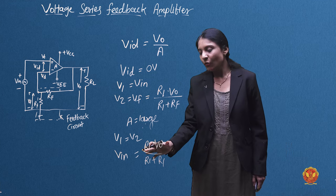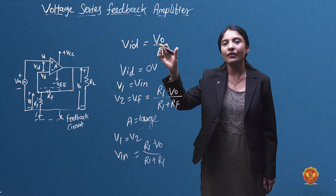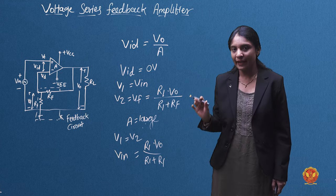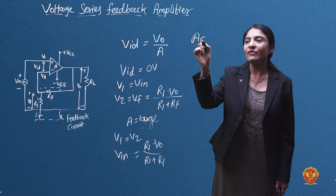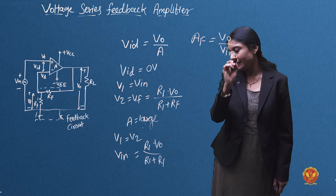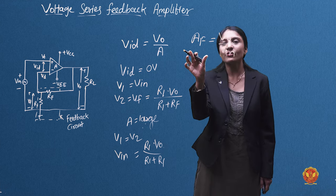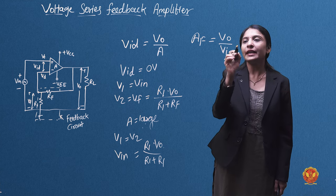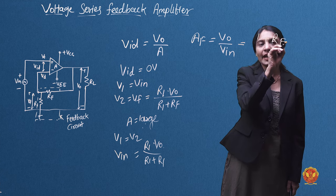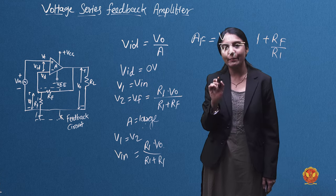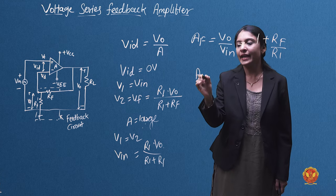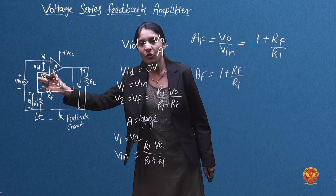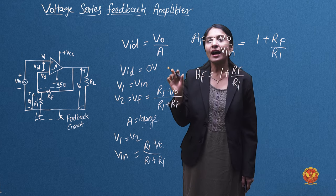We will calculate VID, which is VO divided by A. From the closed-loop feedback gain, we get AF equal to VO divided by VIN. Solving this equation gives us VO divided by VIN equal to one plus RF divided by R1. Therefore, the closed-loop voltage gain AF equals one plus RF by R1, when the input differential voltage of the voltage series feedback is ideally zero.